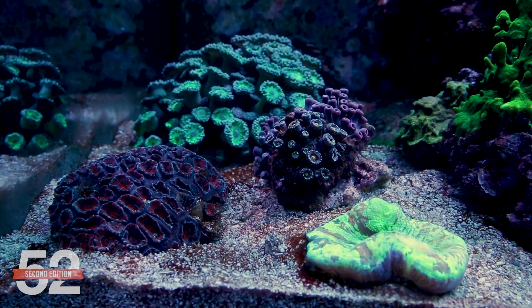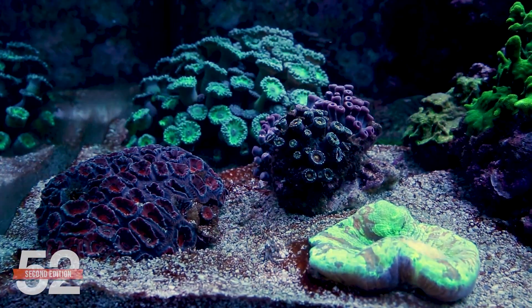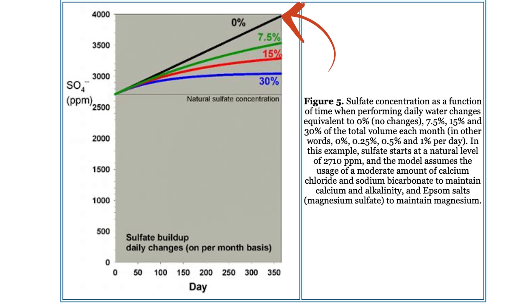Considering the study we just mentioned, it might show up as we approach five months, but not in mortality — in harder-to-define decreases in health and stress. The two-part article demonstrates the effect of water changes on the sulfate portion once water changes are considered. Zero water changes has the expected perpetual rise to nowhere good. 7.5 to 15% monthly slows the progression, and 30% monthly changes produces a small rise and then stabilizes.